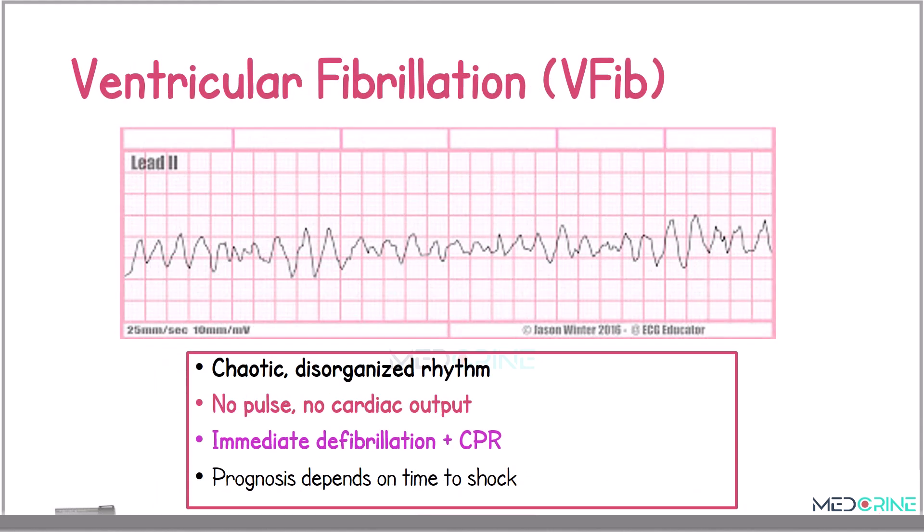Then we have ventricular fibrillation. Ventricular fibrillation, or V-fib, is a life-threatening arrhythmia with chaotic disorganized electrical activity, no pulse, and no cardiac output. It requires immediate defibrillation with cardiopulmonary resuscitation. The prognosis depends on the time to deliver the shock.